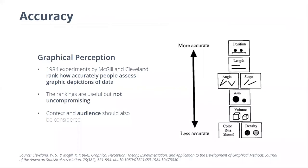Let's move on and talk about accuracy and visualizations. In 1984, an experiment was done that looked at how accurately people could understand different graphical representations of data points. They found that when it came to position, it was easy for people to understand accurately what was going on — two numbers that are close together, represented by two dots that are close together, is pretty intuitive. Also with length, people tend to interpret it easily.